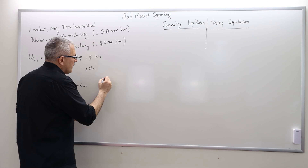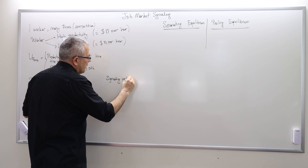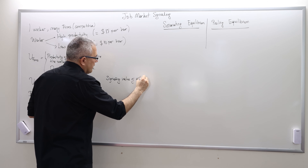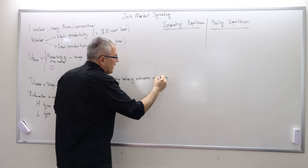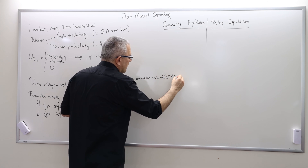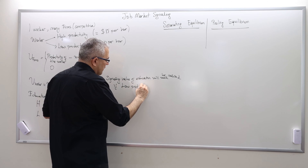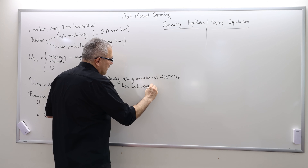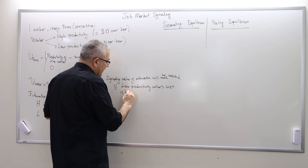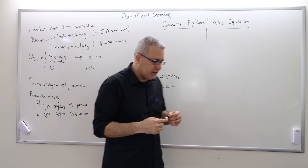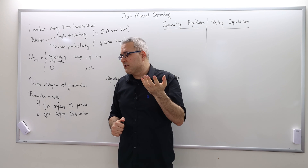The signaling value of education will be realized if the low-productivity worker's cost of education is higher than the high-productivity worker's cost of education.